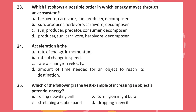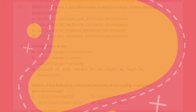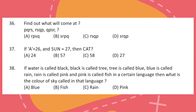Question 35: Which of the following is the best example of increasing an object's potential energy? Question 36: Find out what will come at? Question 37: If A equals 26 and sun equals 27, then cat equals?